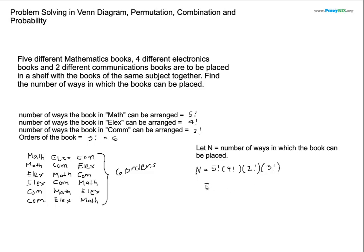So therefore, so we have, so five factorial. So we have 120 multiplied. Four factorial is 24. Two factorial is times two. And three factorial is times six. So equivalent to 34,560 ways.